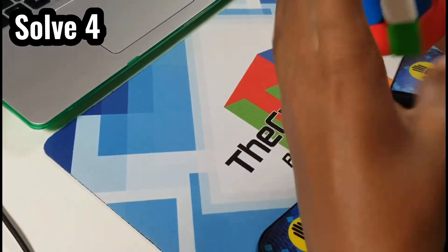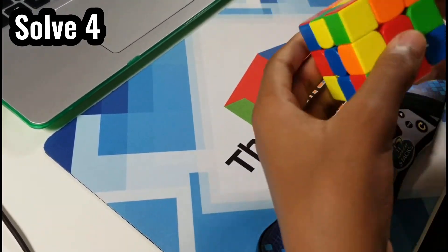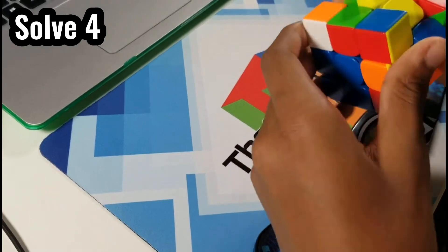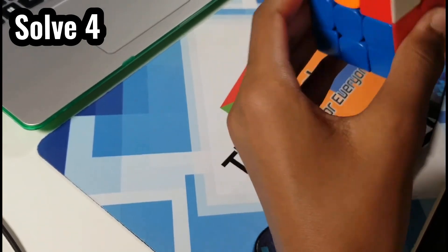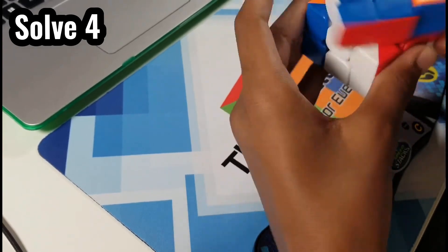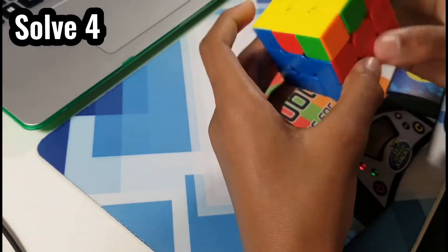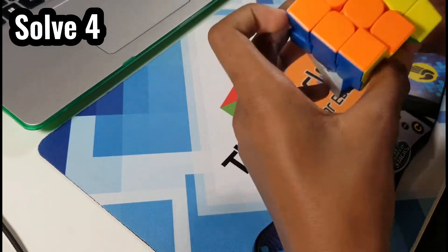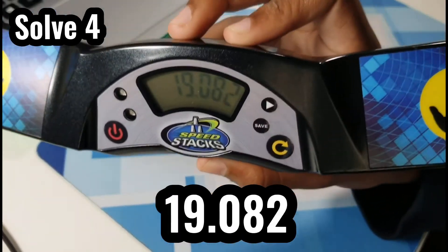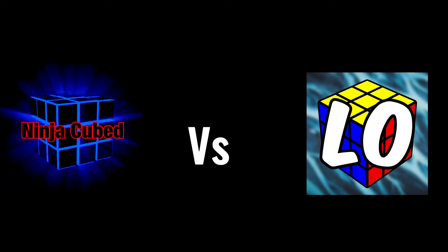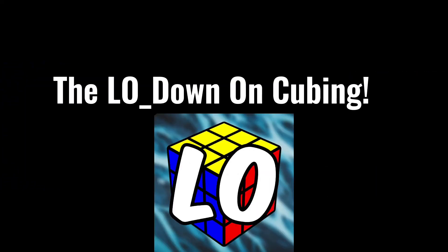Okay, so the low down on cubing starts his fourth solve. Again, unfortunately, a bit out of frame. The cross was definitely not that good, unfortunately. But the F2L, again, is just really good, because he specializes in F2L. Now on to OLL, doing two look, just like me. And finally, we have an E perm for a total of 19.082. The winner of the fourth round is the low down on cubing.